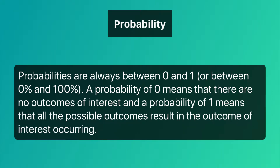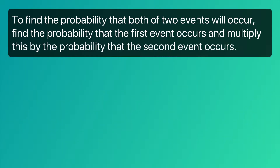Probabilities are always between zero and one, or between zero percent and one hundred percent. A probability of zero means that there are no outcomes of interest. A probability of one means that all the possible outcomes result in the outcome of interest occurring.